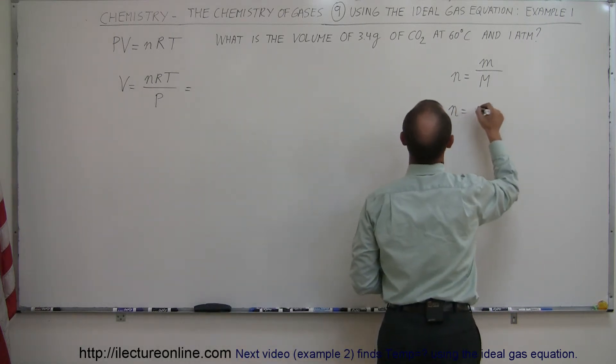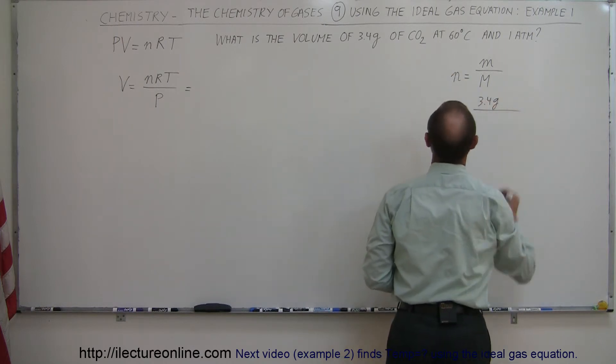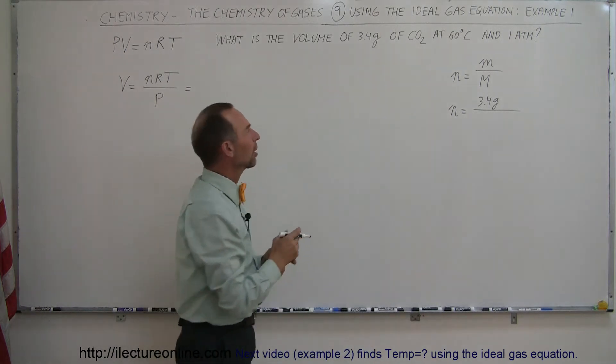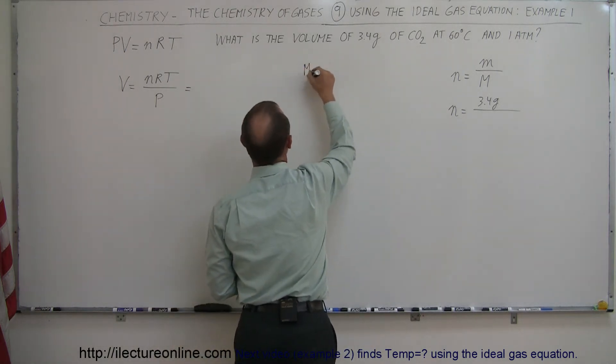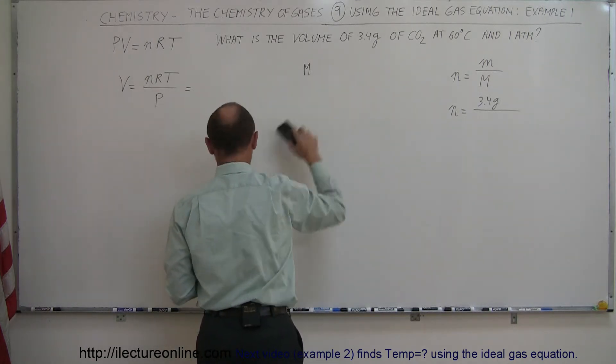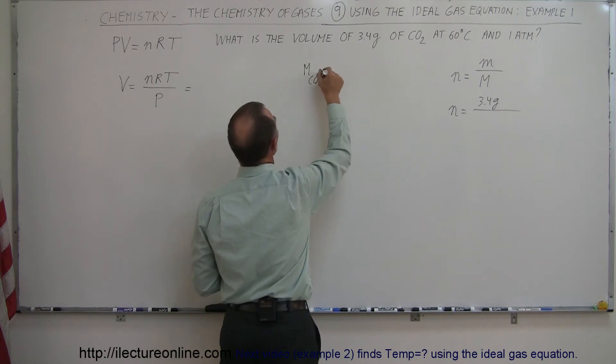So n is equal to 3.4 grams divided by carbon dioxide. What is the molar mass of carbon dioxide? So the molar mass is equal to, and I should say carbon dioxide underneath of course, it's not the same for every gas, CO2 is equal to.